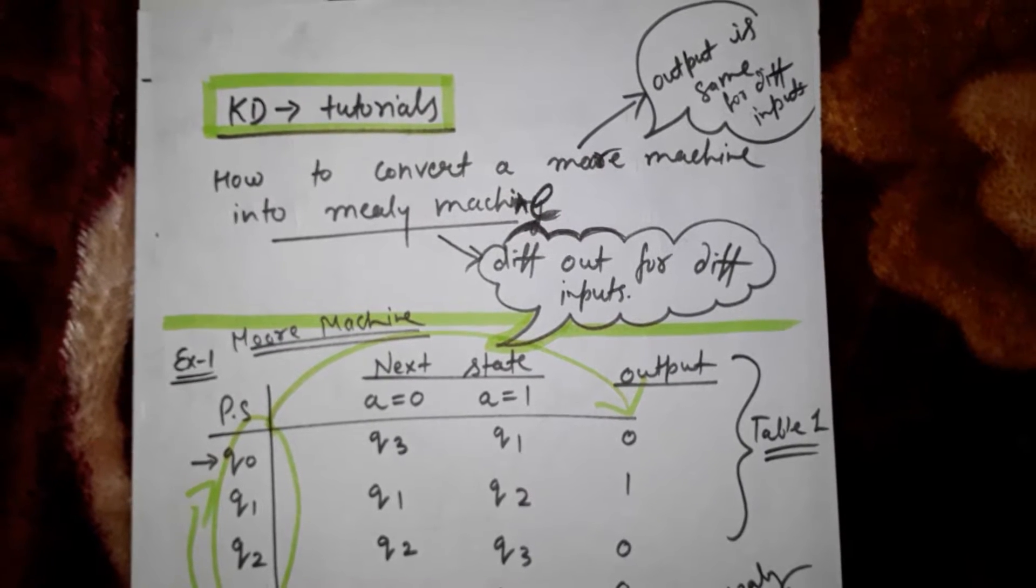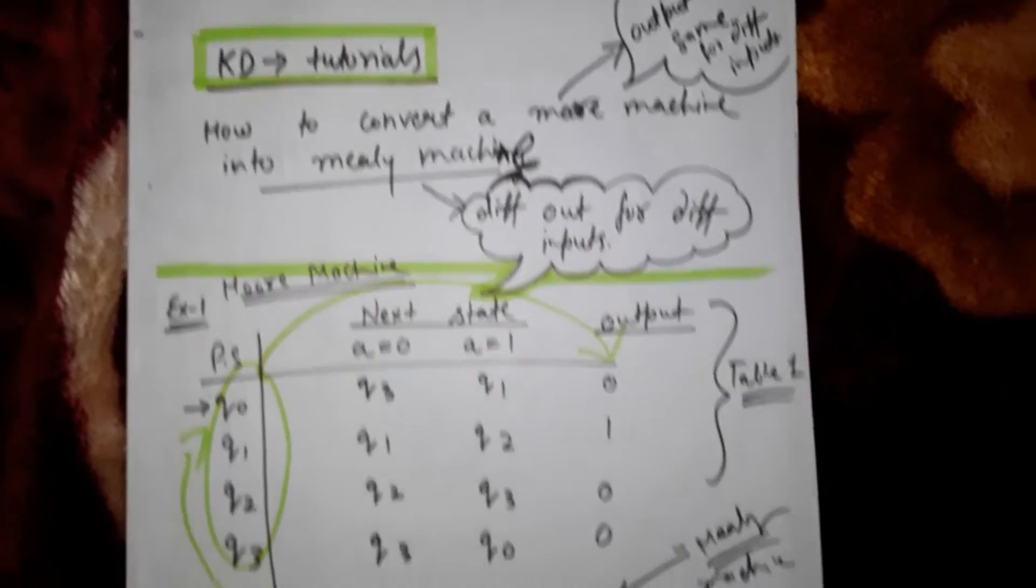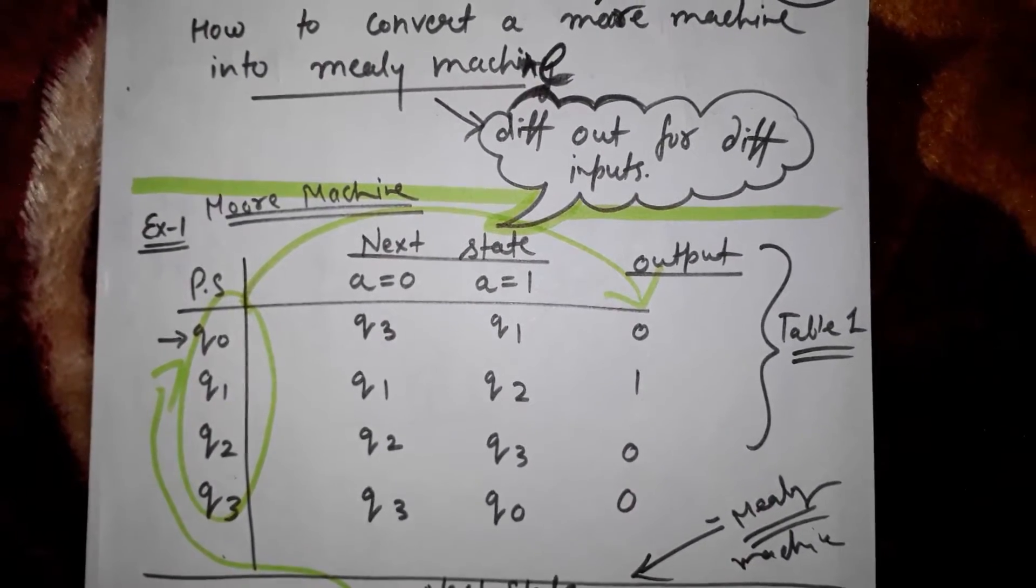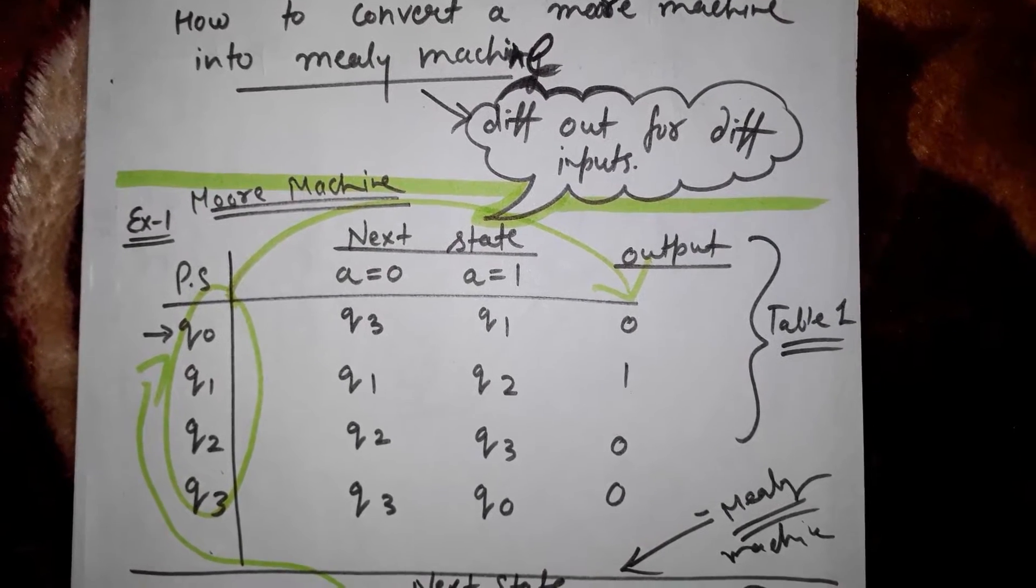would be the same, while in a Mealy machine the output for each input would be different. Now consider this example to see how in a few steps we can convert a Moore machine into a Mealy machine.